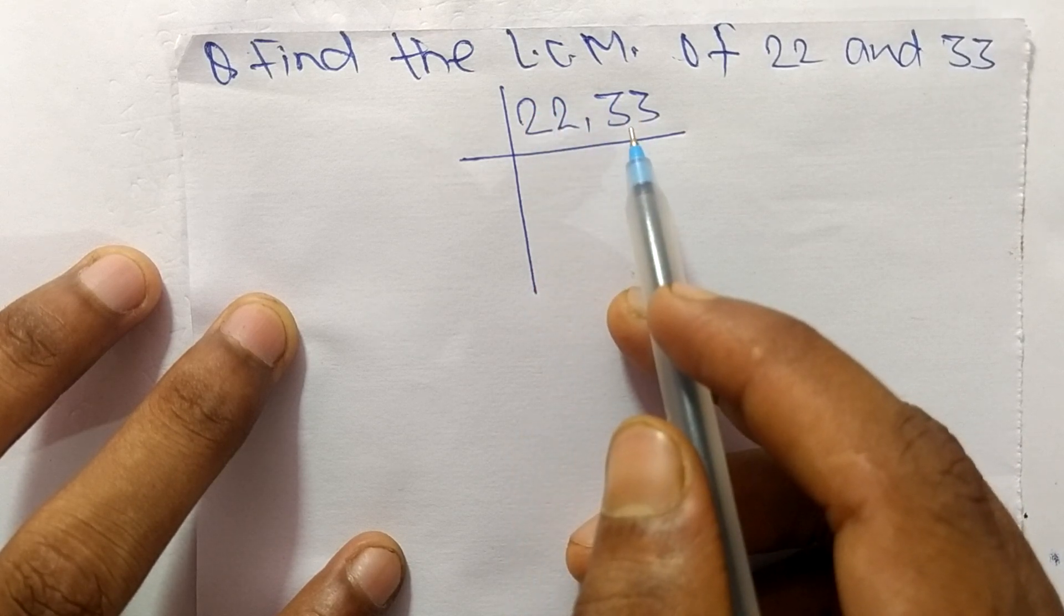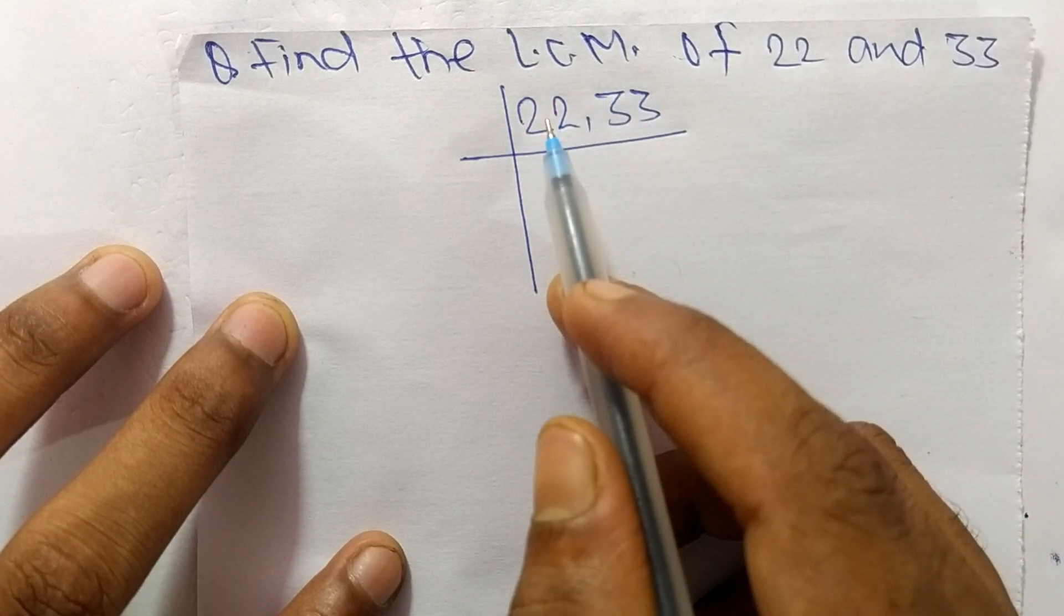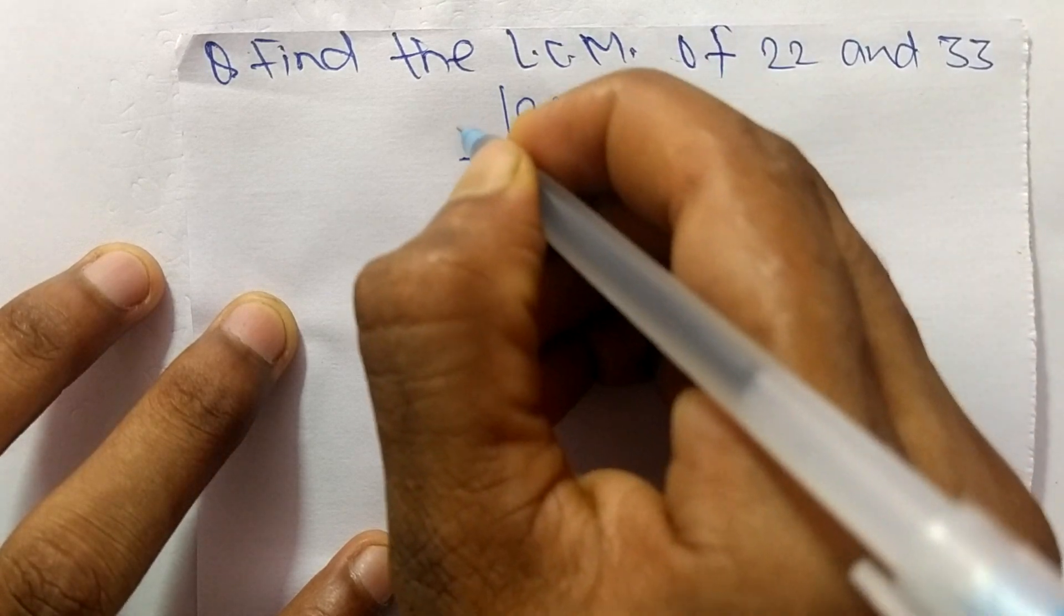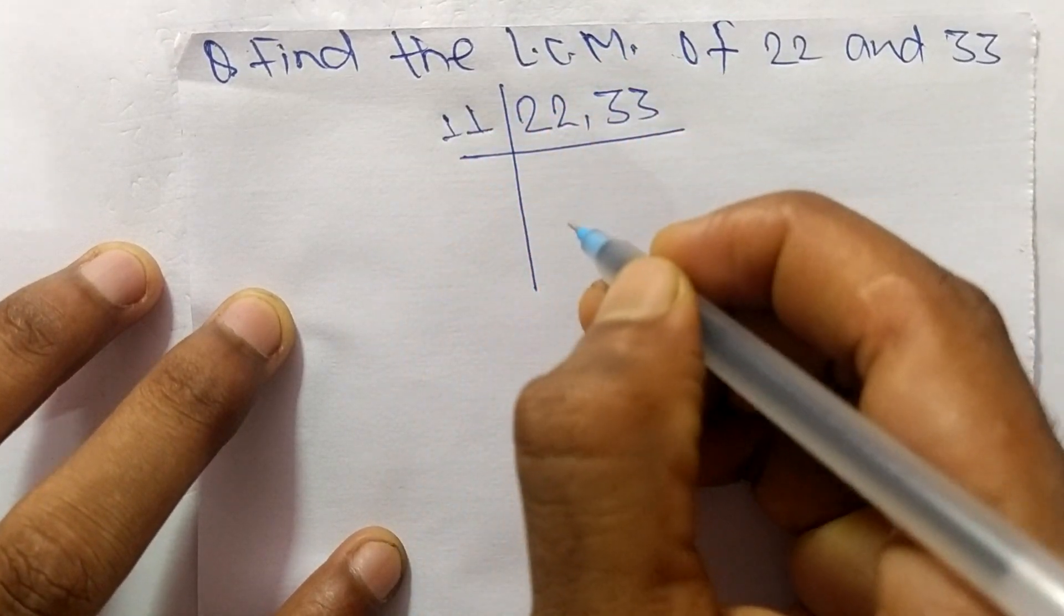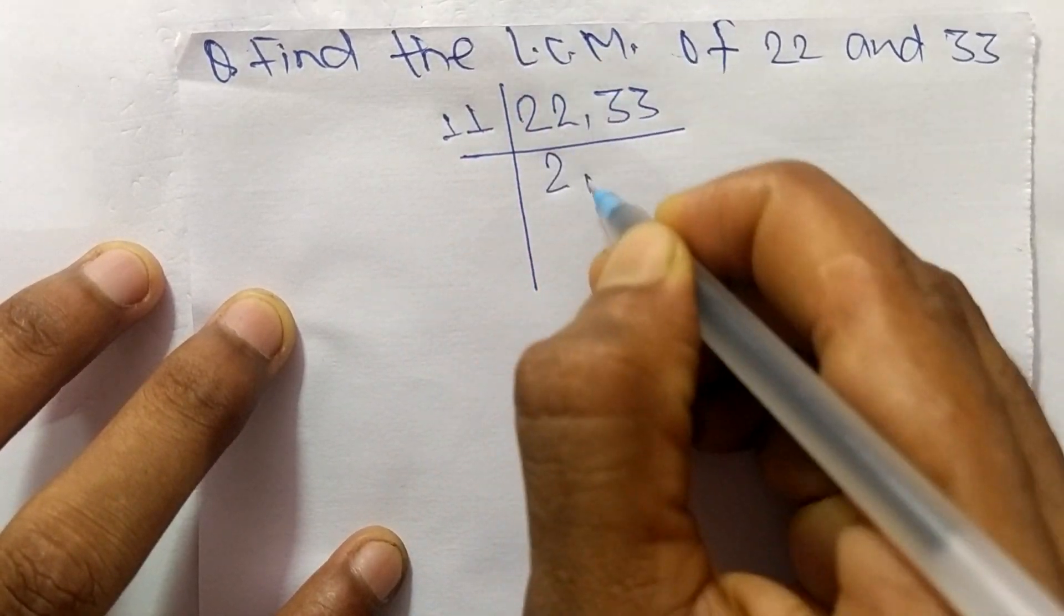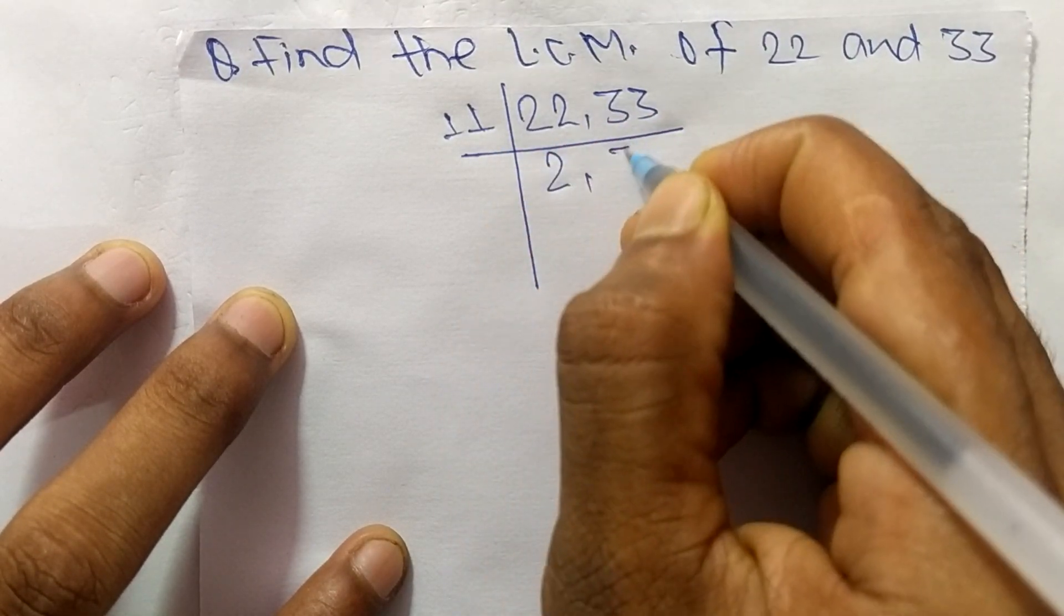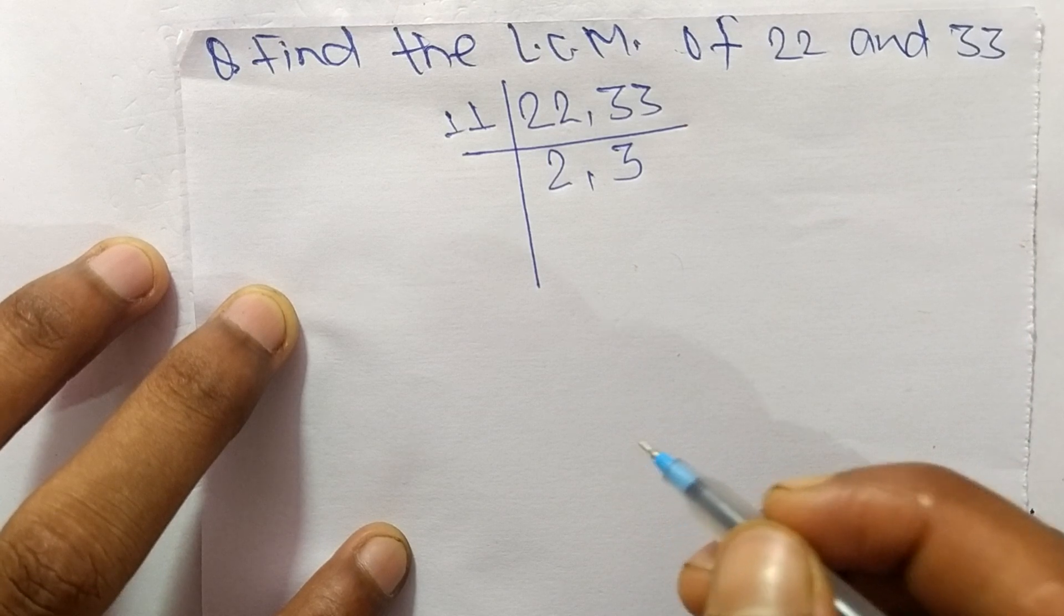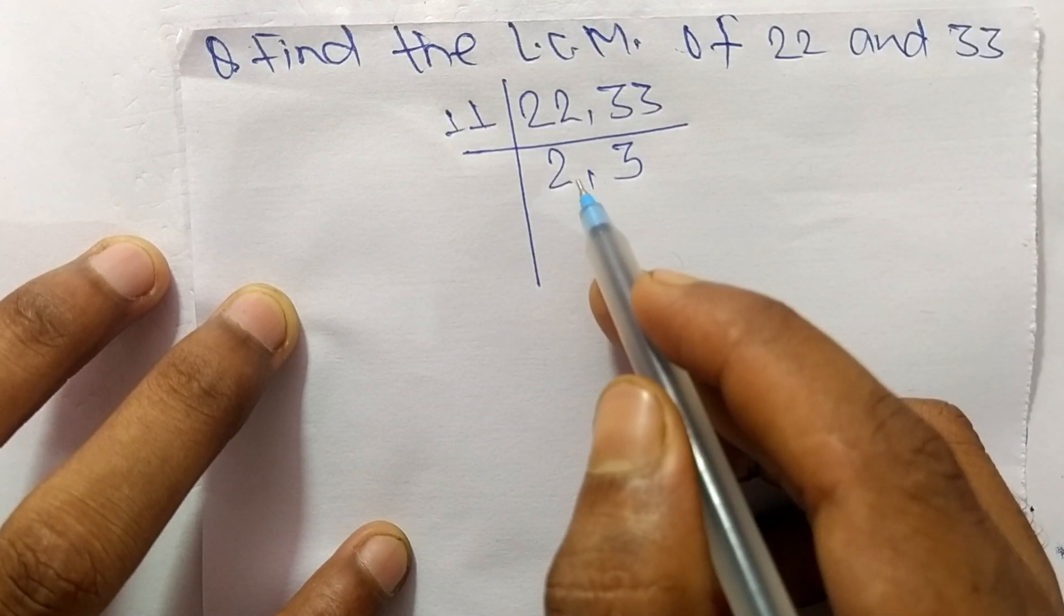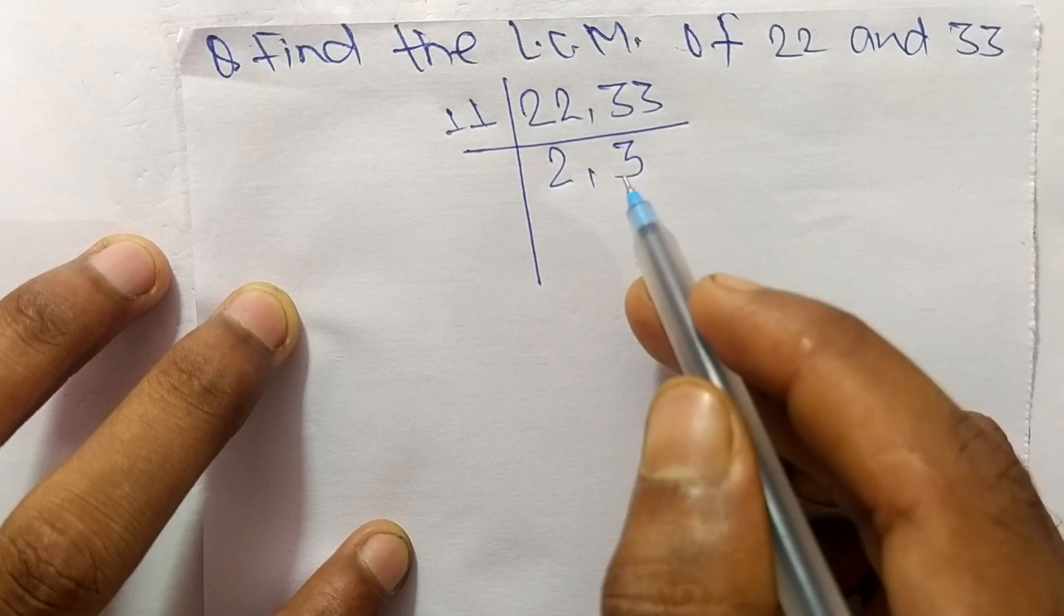So we take here 11. So 11 times 2 means it is 22, and 11 divides 33 we get 3. So now we have here 2 and 3 which are not exactly divisible by the same number.